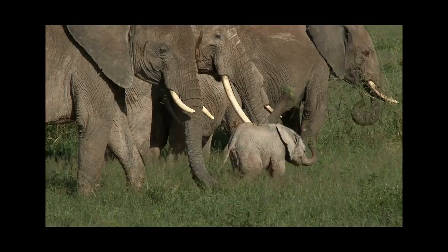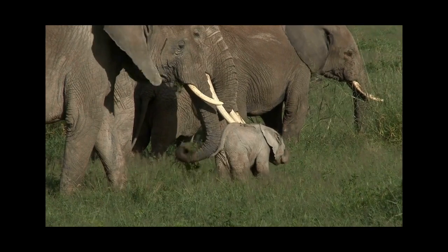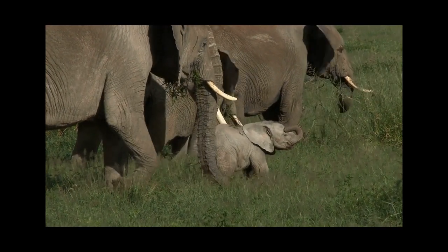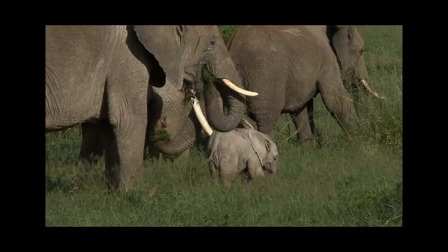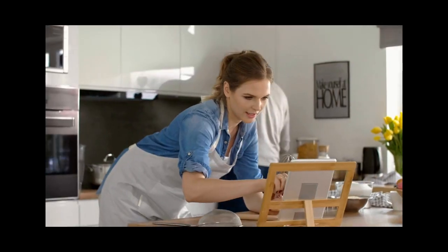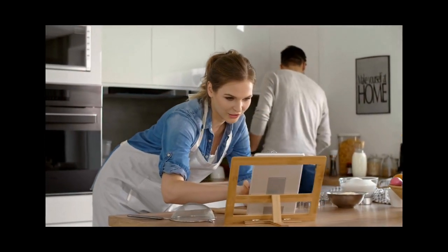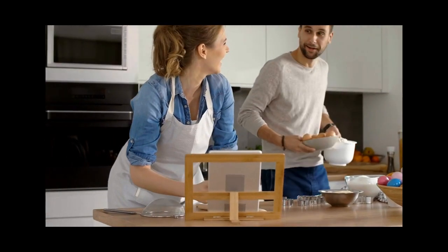Similarly, an animal might have the genes to grow large, but if it can't find enough food or lives in a crowded environment, it might not reach its full size. It's like having a recipe for a large cake, but not having enough ingredients or oven space to make it.